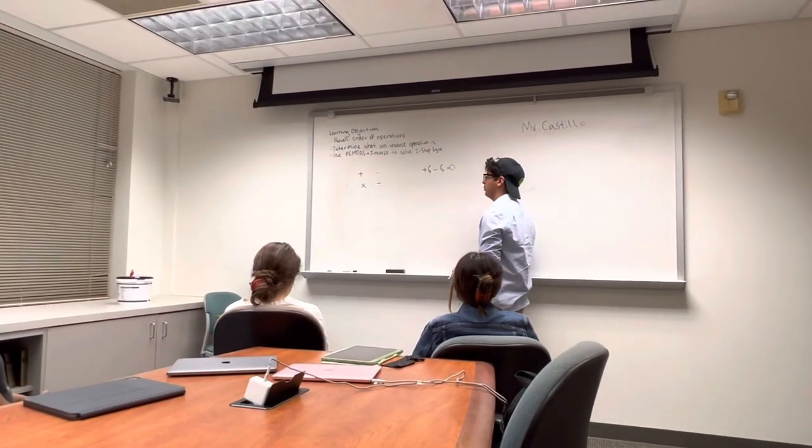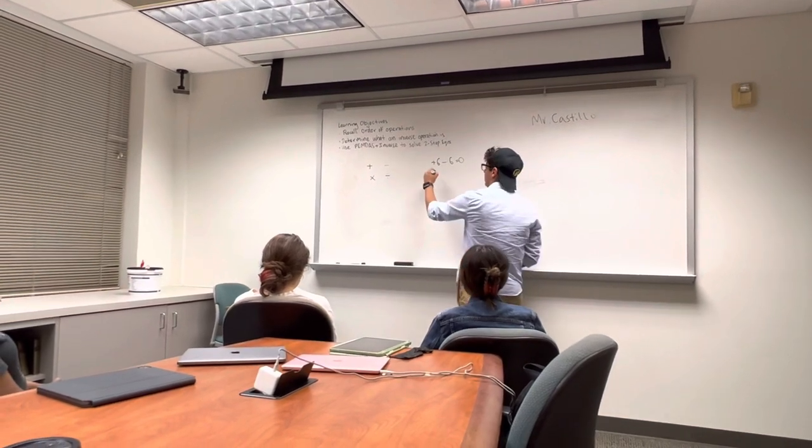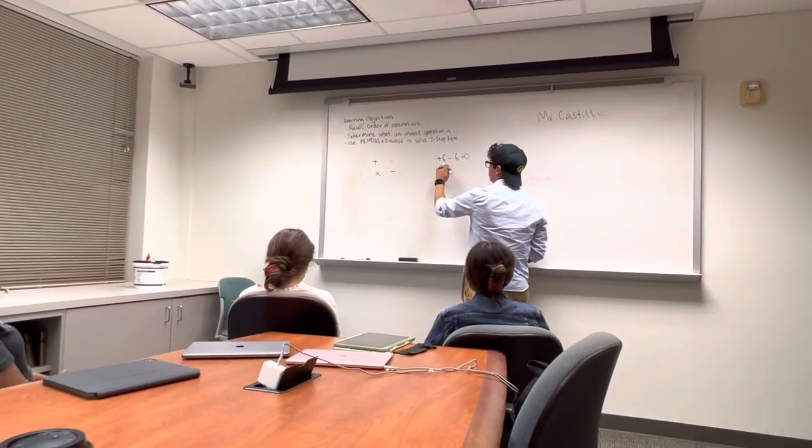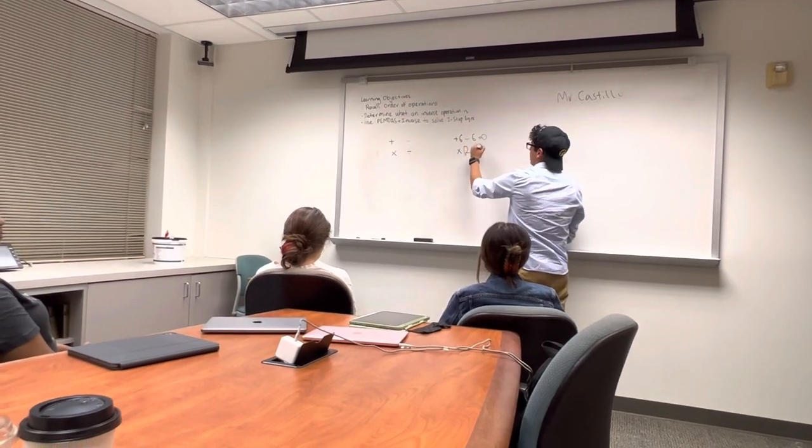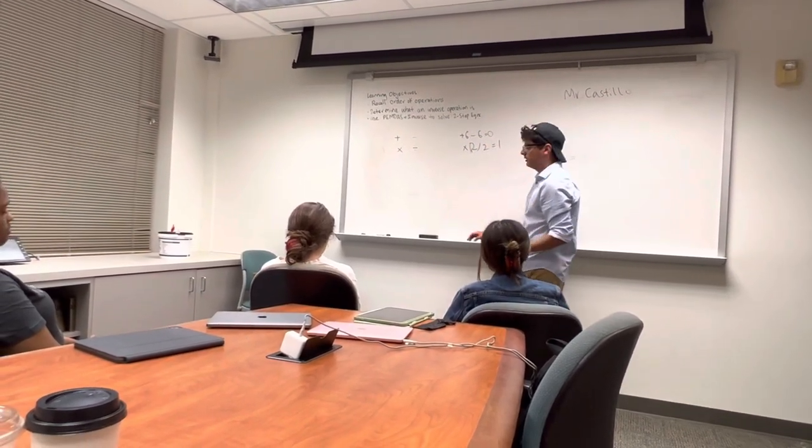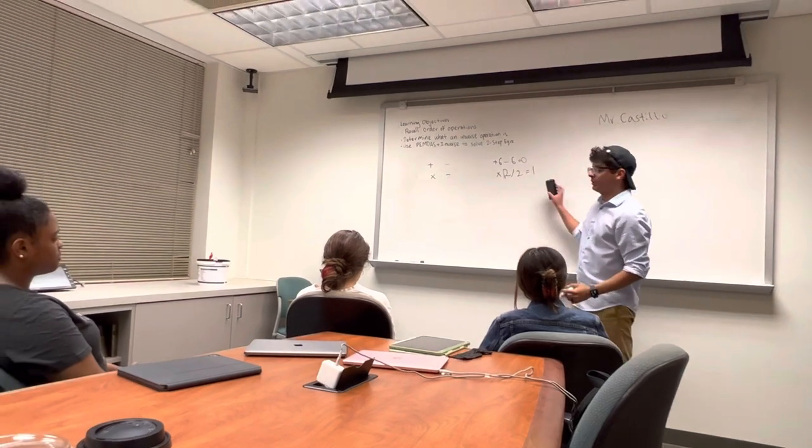But with multiplication and division, we want the number to equal to 1. So let's say we have times 2. So we divide by 2, and that gives us 1. And so that's how we know the inverse of each operation.